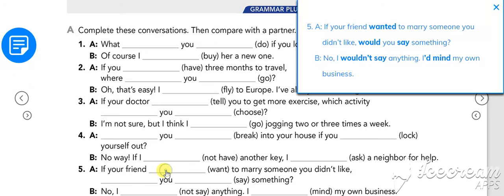Number five: if your friend wanted to marry someone you didn't like would you say something? Letter B: no, I wouldn't say anything. I'd mind my own business.